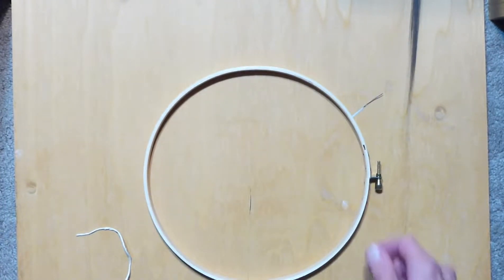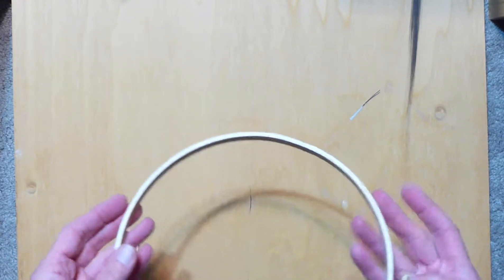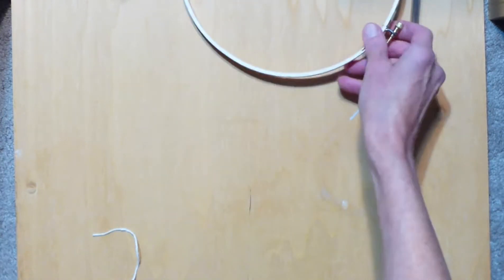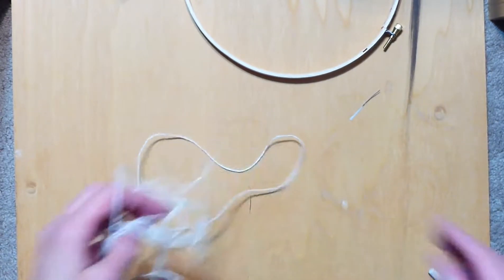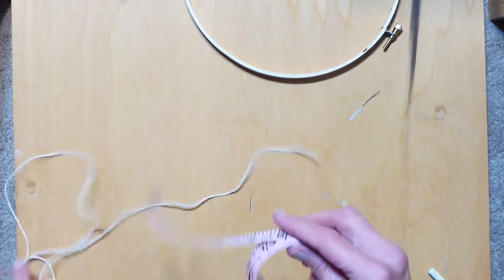To do this project we're going to need your embroidery hoop, about five or six arm lengths of string, and a measuring tape.